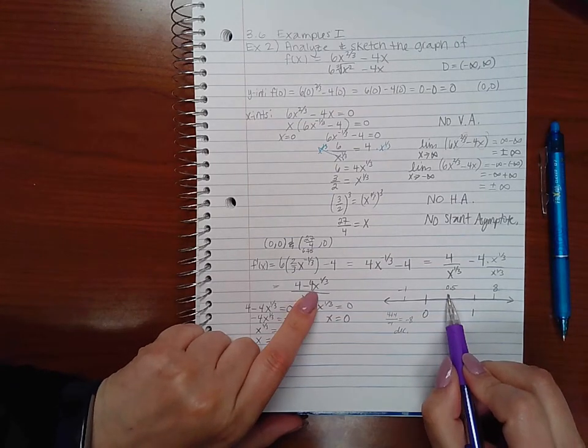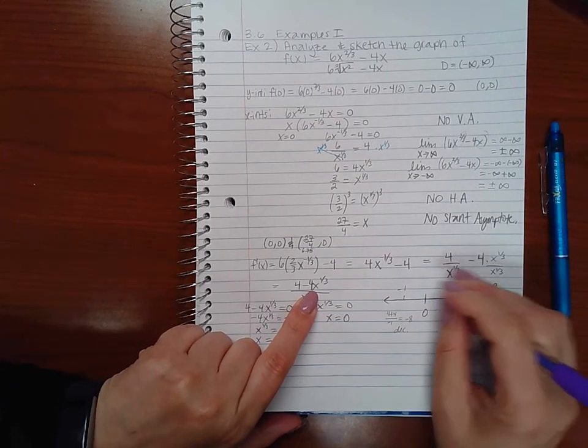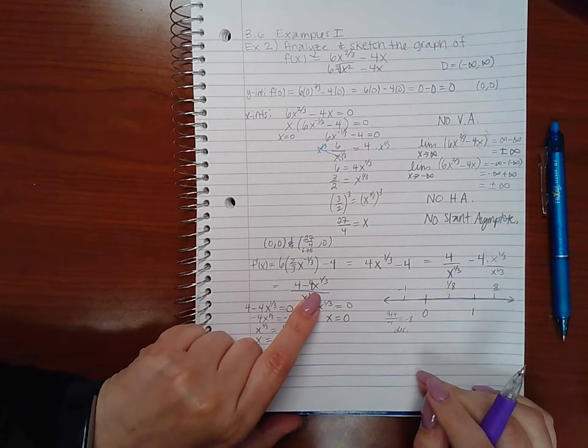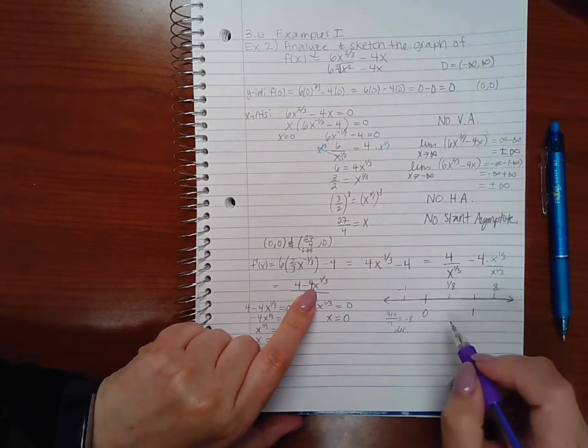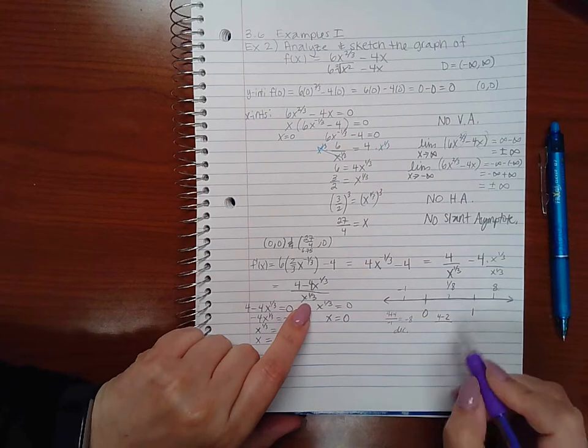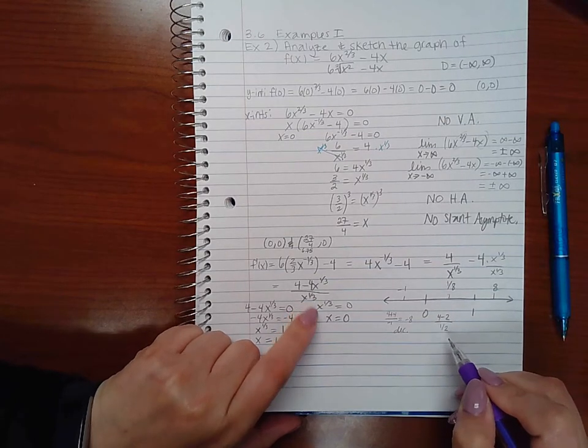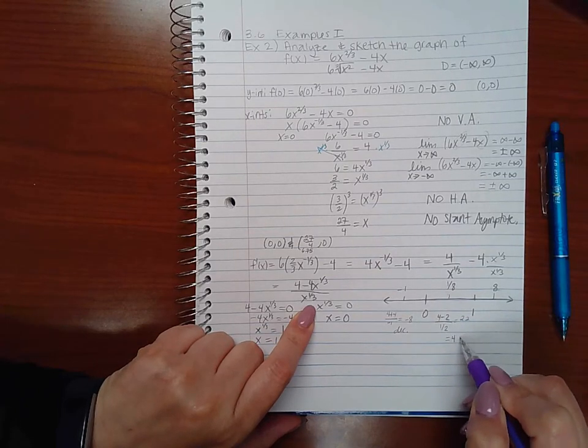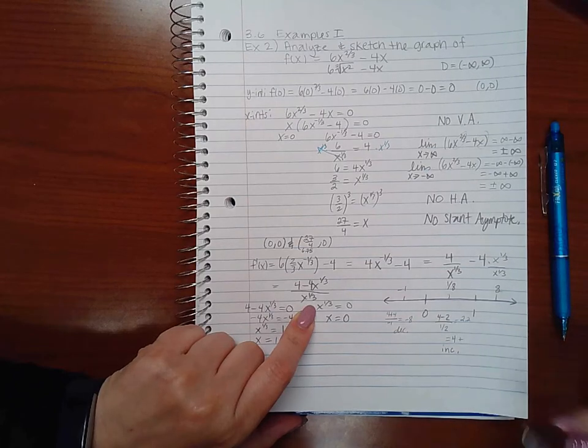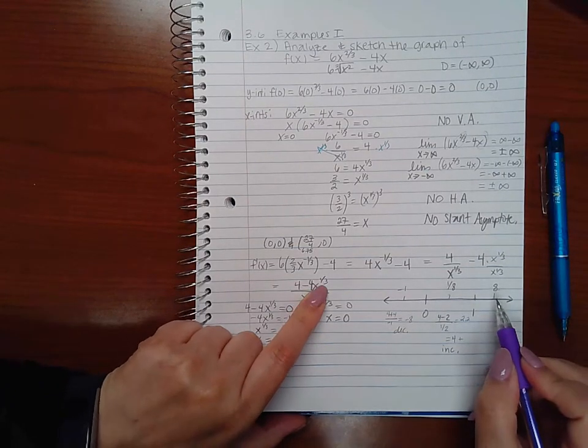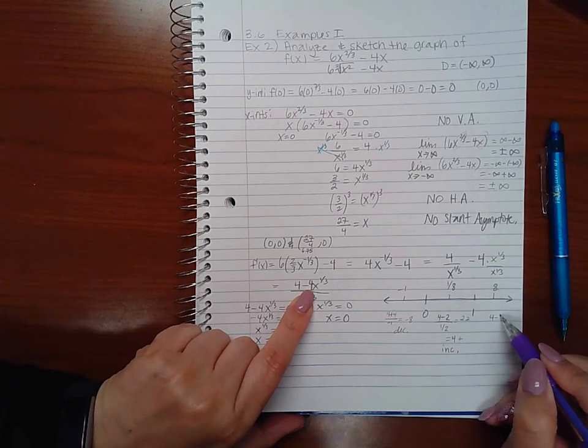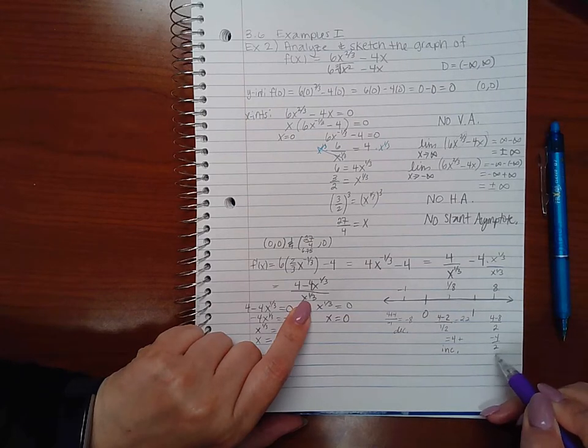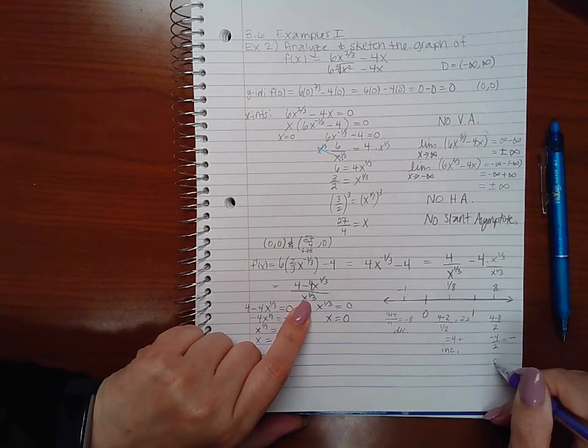Now if I plug in a half, actually I don't want to use a half because again that's not a perfect cube. Let's try 1/8. The cube root of 1/8 is 1/2 and negative 4 times 1/2 is negative 2. And down at the bottom I have 1/2 because the cube root of 1/8 is 1/2. So this is really 2 times 2, which equals 4. It's a positive, which means in this section we're increasing. Now when I plug in 8, the cube root of 8 is 2. 2 times negative 4 is negative 8. The cube root of 8 is 2. So I end up with negative 4 over 2, which is a negative. And that means this section is decreasing.